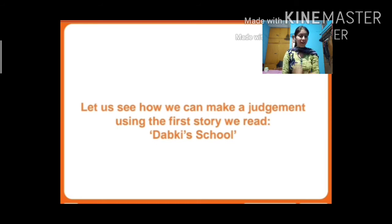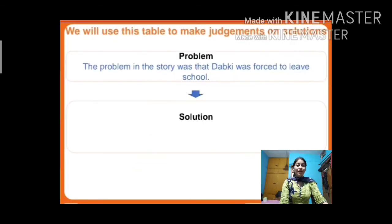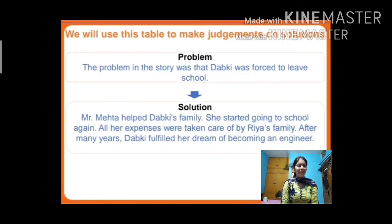Using the first story, Dupki's School: the problem was that Dupki was forced to leave school. The solution in the story was that Mr. Mehta helped Dupki's family — she started going to school again, all her expenses were taken care of by Ria's family, and after many years Dupki fulfilled her dream of becoming an engineer.